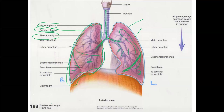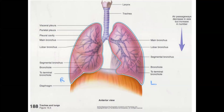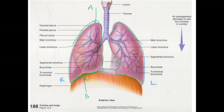The apex of the lung is the part that comes to a point, and the base is the broader, flatter part. The heart also displaces the left lung a little bit because the heart favors the left side of the chest.